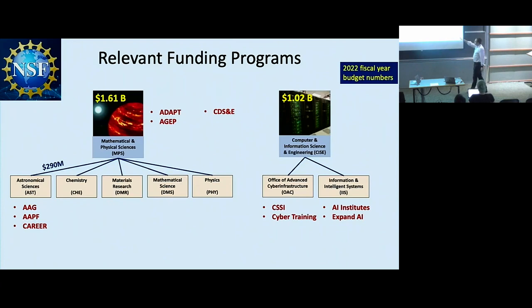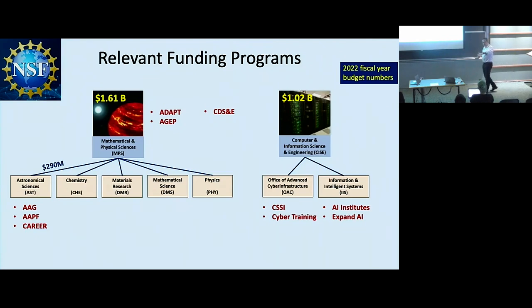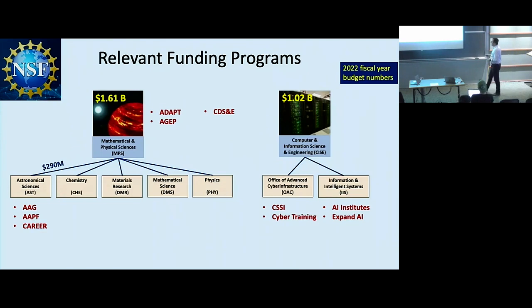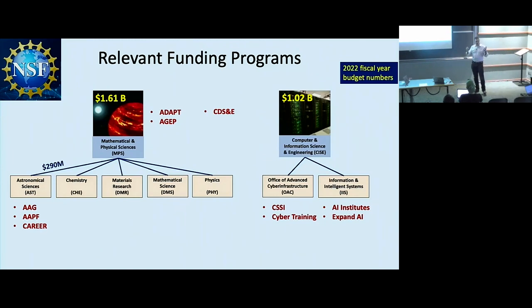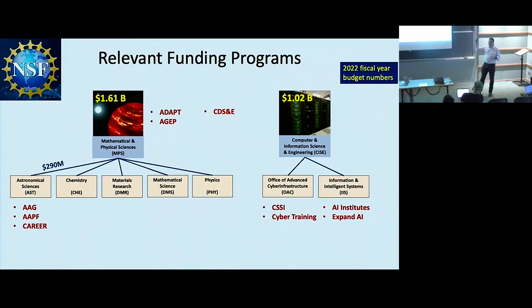The OAC division has the CSSI program for developing cyber infrastructure — basically software development. There's also a new one called Cyber Training, which funds training people to use infrastructure or build it themselves. The really exciting one is the AI Institutes program — we expect to have some institutes focused on astronomy. That's coming through the IIS division, and there's another new program called ExpandAI, which is for minority-serving institutions to connect with AI institutes. We also have ADAPT and AGUp affiliated with the MPS directorate, and the CDSNE, which lives across the whole foundation.